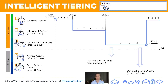Optionally, you can choose to configure the two archive tiers at the bottom. The first one requires at least 90 days, but you can specify a larger number up to 730 days when it gets activated. The same applies to the deep archive access tier, where the minimum is 180 days.